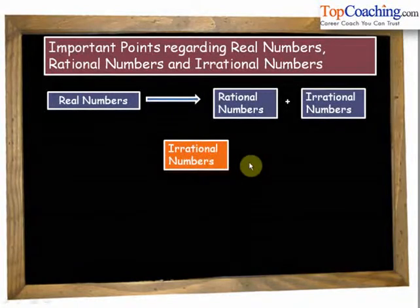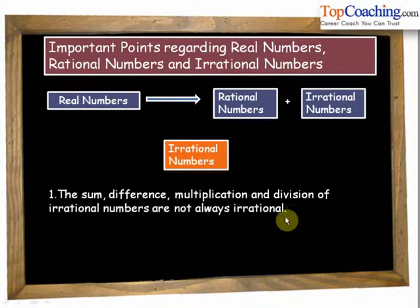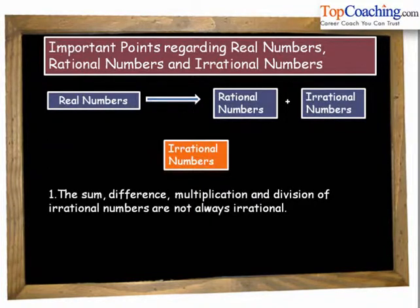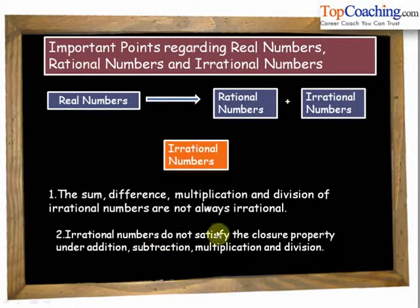Now let's see some points about irrational numbers. The sum, difference, multiplication and division of irrational numbers are not always irrational. We cannot say for sure whether adding, subtracting, multiplying or dividing two irrational numbers gives an irrational or rational result — it depends on the values of the two irrational numbers. Therefore, irrational numbers do not satisfy the closure property under addition, subtraction, multiplication and division.